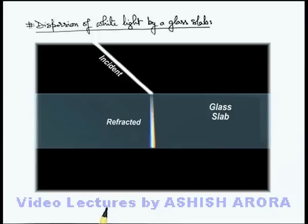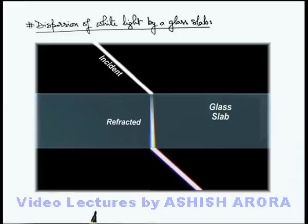Now, when this light beam is again refracted into air, the finally emerging beam will be parallel to the initial beam. As we know, through a glass slab there is no net deviation — it only laterally displaces the beam. The same is happening here, and we can see the beam will be slightly thicker compared to the incident beam.